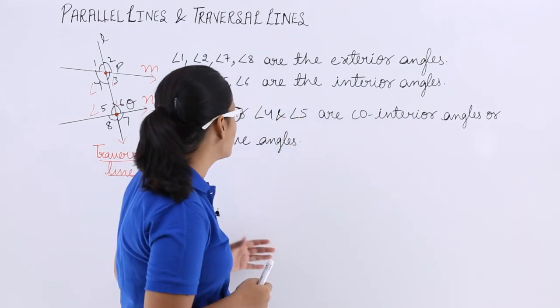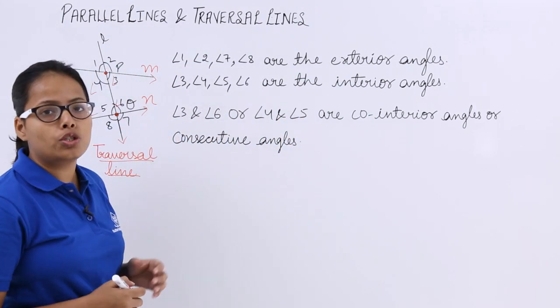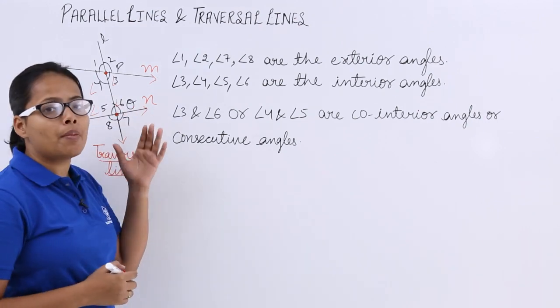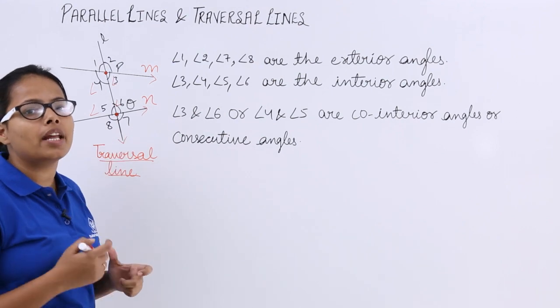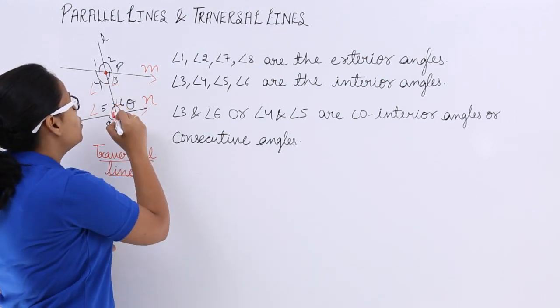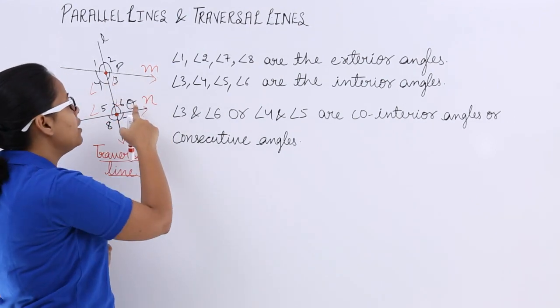Let's see on board what are the transversal lines. I have drawn two random lines M and N and there is one transversal line which is cutting both of these lines M and N on two distinct points P and Q.